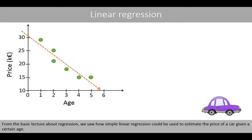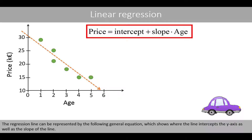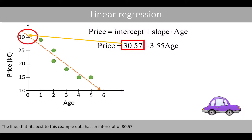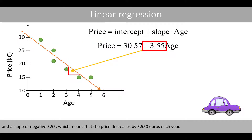From the basic lecture about regression, we saw a simple linear regression could be used to estimate the price of a car given a certain age. The regression line can be represented by the following general equation, which shows where the line intercepts the y-axis as well as the slope of the line. The line that fits best to this example data has an intercept of 30.57 and a slope of negative 3.55, which means that the price decreases by 3550 euros each year.